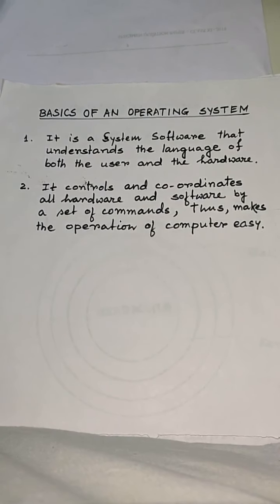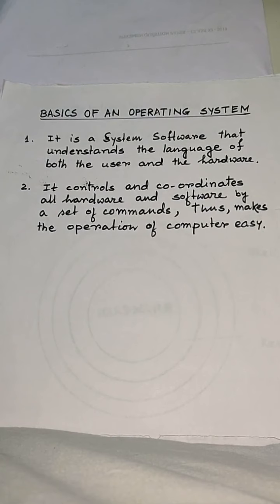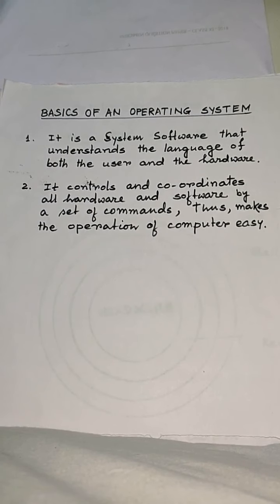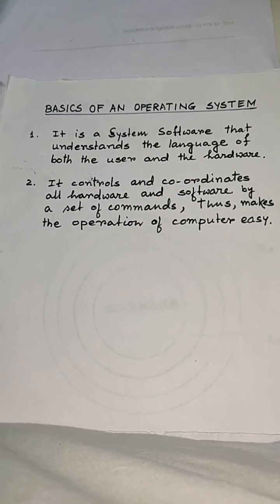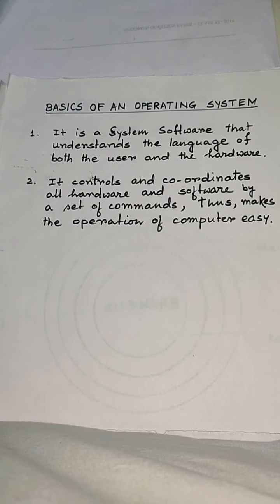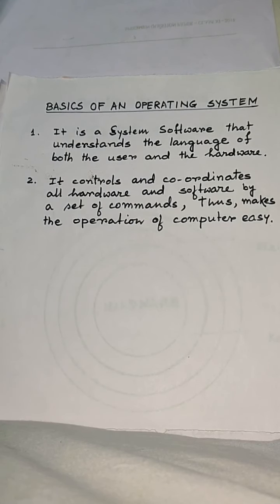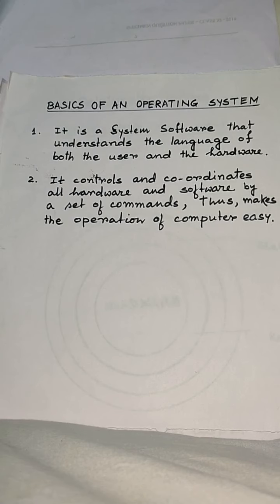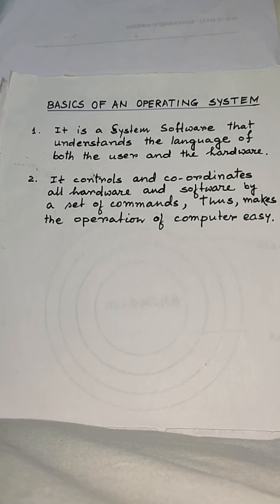IBM 701 is regarded as the first commercial scientific computer that had the first operating system. Later on, different operating systems and their advanced versions were developed as per the necessity of the growing complexity of hardware. In the early 1980s, MS-DOS was released by Microsoft. In 1985, Windows 1.0 was released by Microsoft.